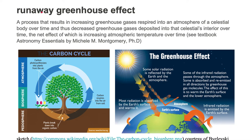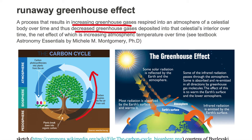In a runaway greenhouse effect, we have a process that results in increasing greenhouse gases respired into an atmosphere of a celestial body over time, and thus decreasing greenhouse gases deposited into that celestial body's interior over time. So if we take a look at a greenhouse gas such as carbon, we have more carbon being released from the ground into the atmosphere by respiration, for example, and we have less being put into the ground.